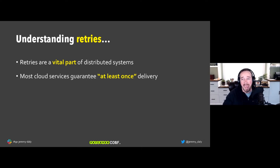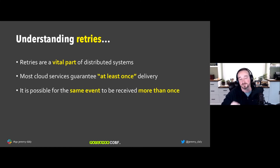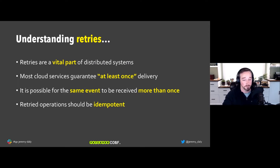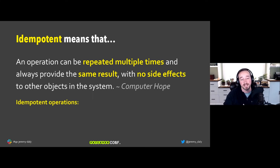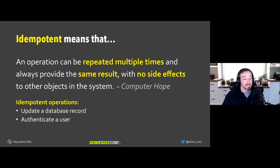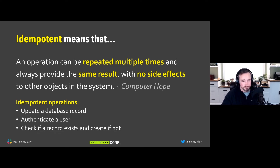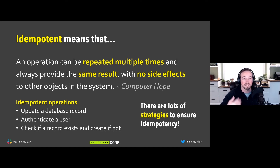Idempotency means something can be repeated over and over and you always get the same result — like pure functions with no side effects. Examples of idempotent operations: updating a database record (other than the modified date), authenticating a user as many times as you want with the same result, or checking if a record exists and creating it only if it doesn't. Make sure all your operations satisfy this.